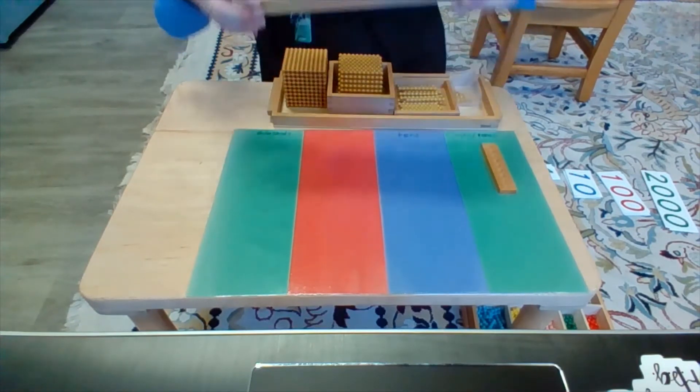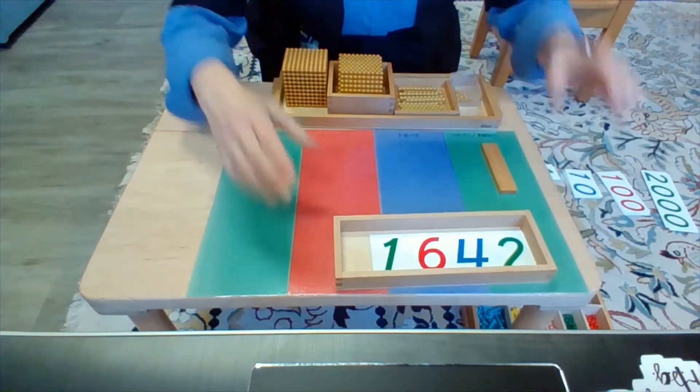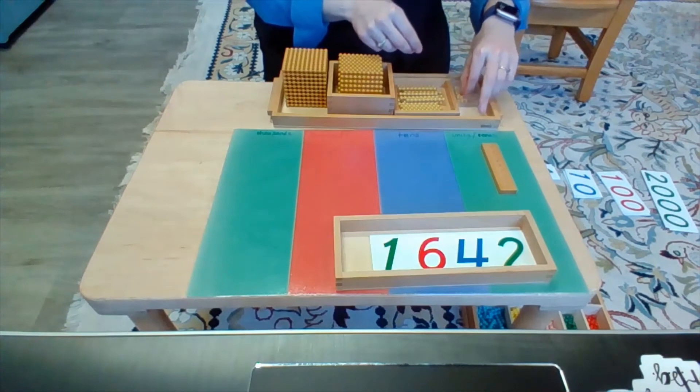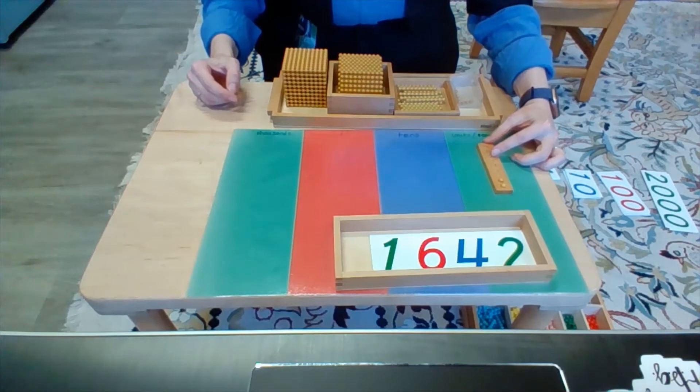So starting with our golden beads, the first thing we are going to do is start by building the 2. So I have two single beads in the units section.